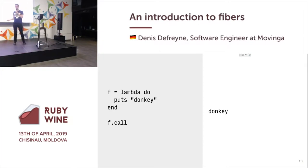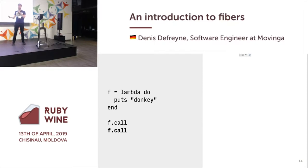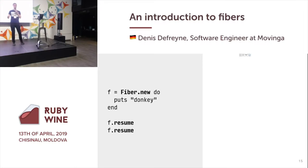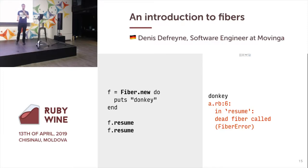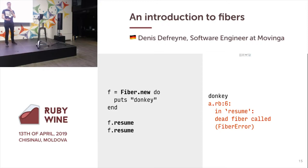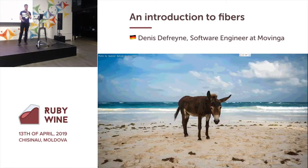Here's a lambda that prints 'donkey'. So if I call it, it prints 'donkey'. Now if I call this lambda twice, it prints 'donkey' twice. So I can replace lambda with Fiber.new, replace call with resume, run this code, and I will print 'donkey' — followed by a 'dead fiber called' FiberError. The reason is that once a Fiber has finished executing, you can't run it anymore. It is spent.